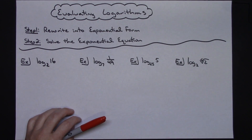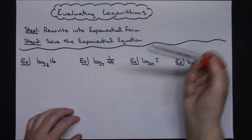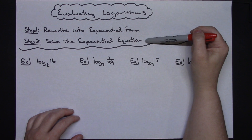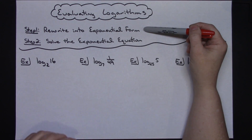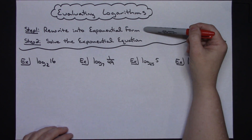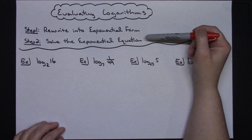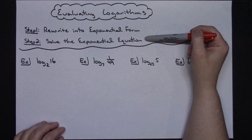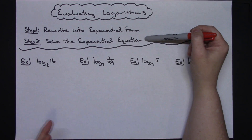In this video I'm going to be showing you how to evaluate logarithms without a calculator. I've got two steps written down here that are pretty helpful. Step one: rewrite into exponential form — we take our log form and rewrite it into exponential form first. That gives us an exponential equation that we can solve. The examples I'm going to do use a method where we try to get like bases.